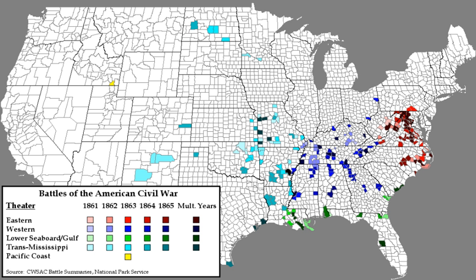For lists of battles organized by campaign and theater, see: Eastern Theater, Western Theater, Trans-Mississippi Theater, Pacific Coast Theater, and Lower Seaboard Theater of the American Civil War. Some battles have more than one name — for example, the battles known in the North as Battle of Antietam and Second Battle of Bull Run were referred to as the Battle of Sharpsburg and the Battle of Manassas, respectively, by the South. This was because the North tended to name battles after landmarks, often rivers or bodies of water, whereas the South named battles after nearby towns.